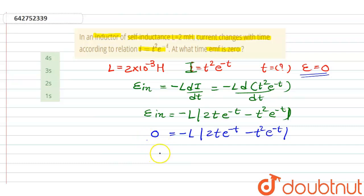This L when goes here, it will become 0. So we can write 2t e power minus t is equal to t square e power minus t. These both will be cancelled out, and one t will be cancelled out.